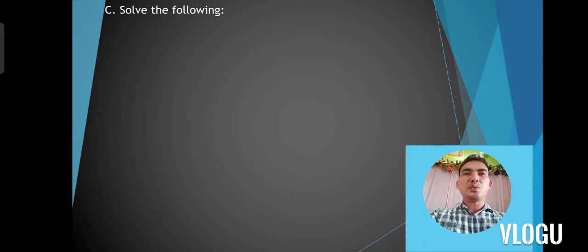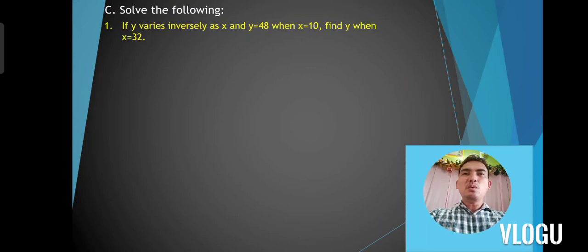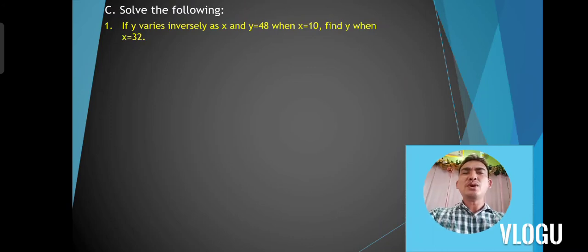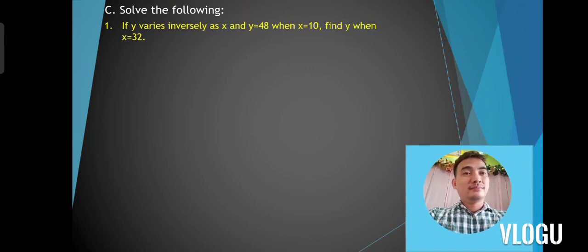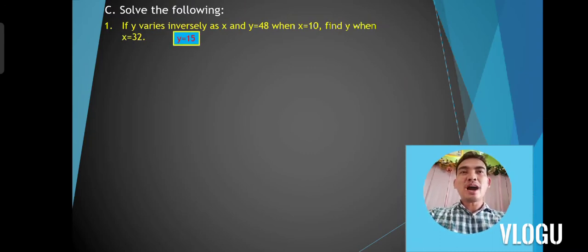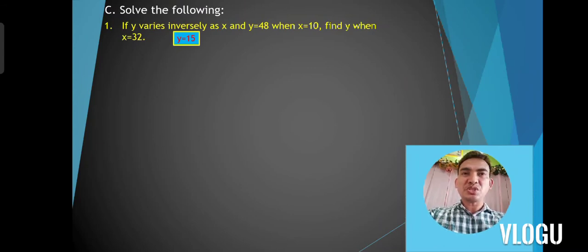Solve the following. Problem number one: if y varies inversely as x and y is equal to 48 when x is equal to 10, find y when x is equal to 32. The correct answer is y is equal to 15. Using the principle of proportion: 48 times 10 equals 480, divided by 32, that gives you 15.